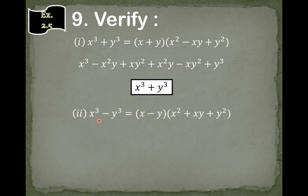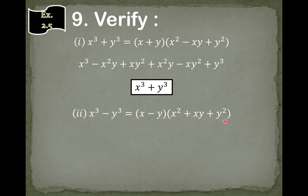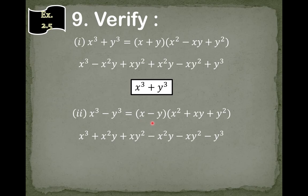Our second question is: x cube minus y cube is equal to x minus y whole bracket multiplied by x square plus x y plus y square whole bracket. So now we have to multiply these out and verify that the answer is x cube minus y cube.